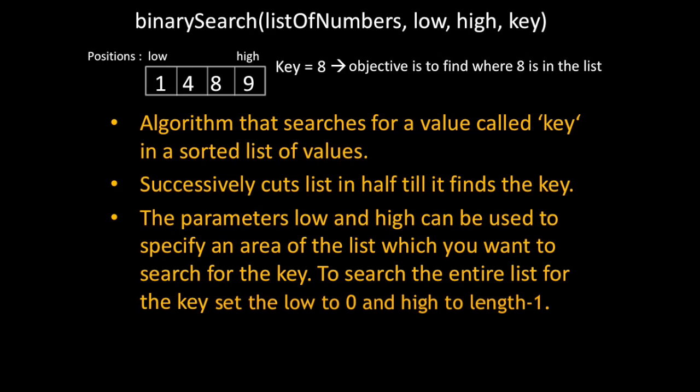Each time you evaluate the middle position between the low and high you can rule out either the values from mid to high or the values from low to mid. It takes in parameters low and high so you can specify a range in the list you're looking for. Low and high are indices and to search for the entire list you can set low equal to zero and high equal to the length of the list minus one.